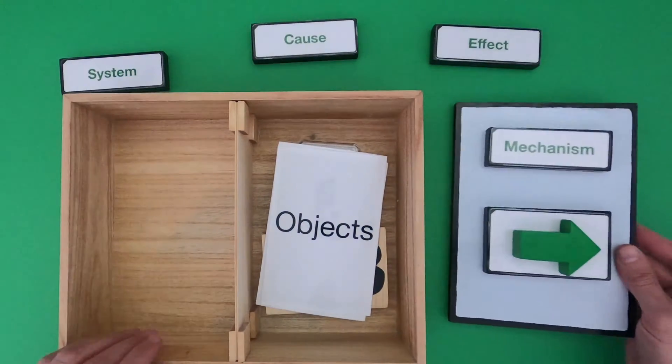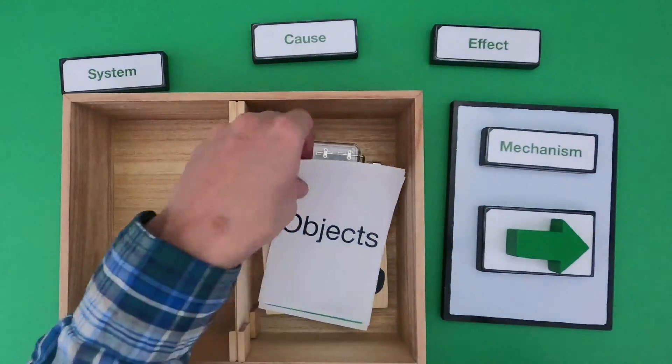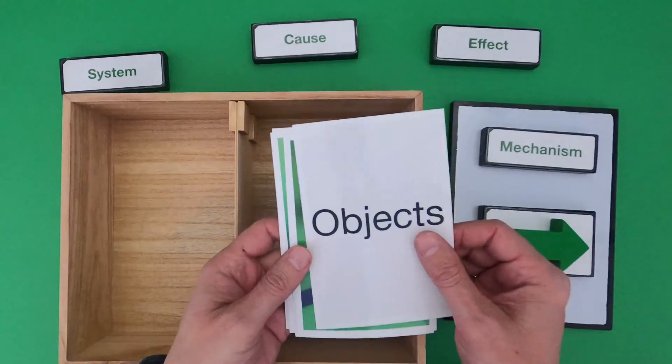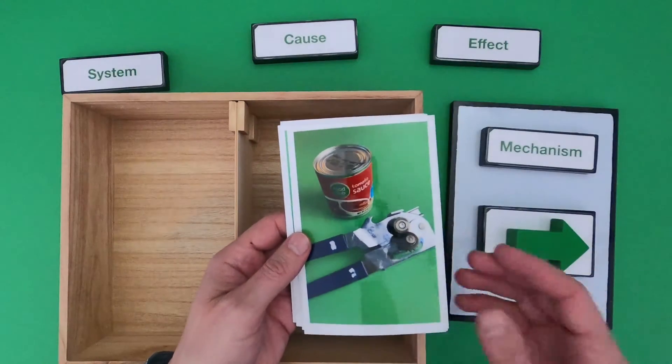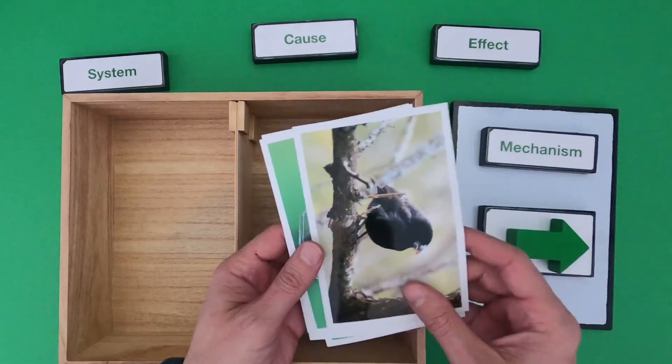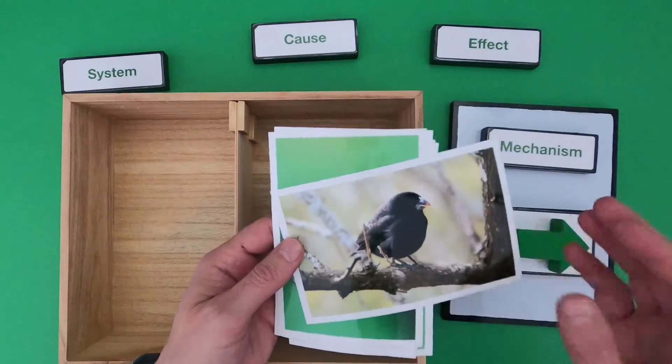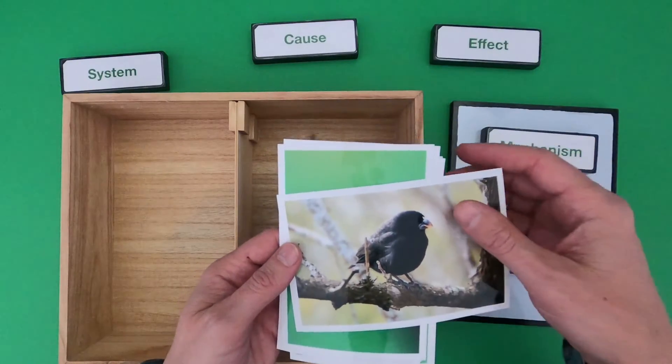So let me put that to the side and we'll organize that in a second. After you watch this video you should be able to identify the cause, mechanism, and effect in simple things like a can opener or even something like the most famous mechanism in biology which is natural selection.